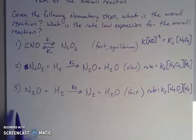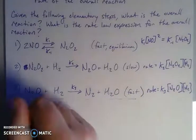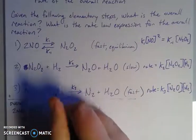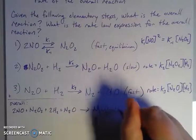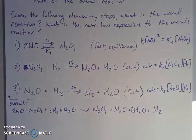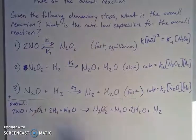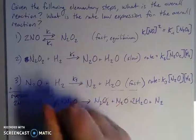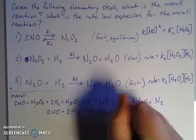Now let's add together everything on my reactant side and everything on my product side. So my overall process is: 2NO + N₂O₂ + 2H₂ + N₂O gives me N₂O₂ + N₂O + 2H₂O + N₂. The next step is to identify my intermediates — things that form along the way but are used up in the process. I have N₂O₂ on both sides and N₂O on both sides. That leaves an overall process of 2NO + 2H₂ gives 2H₂O + N₂.